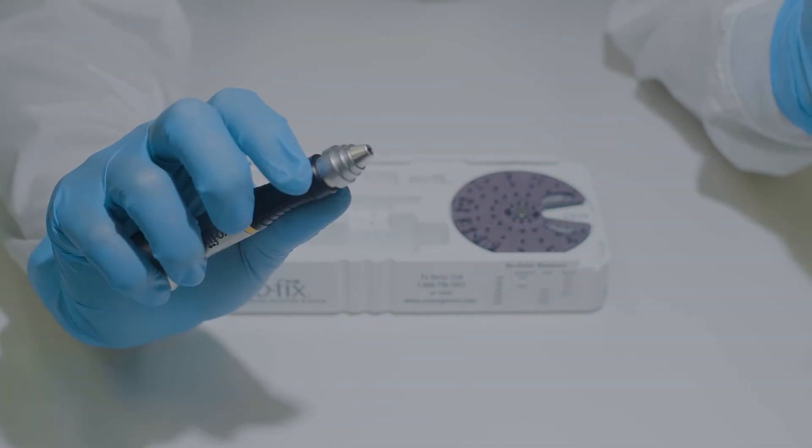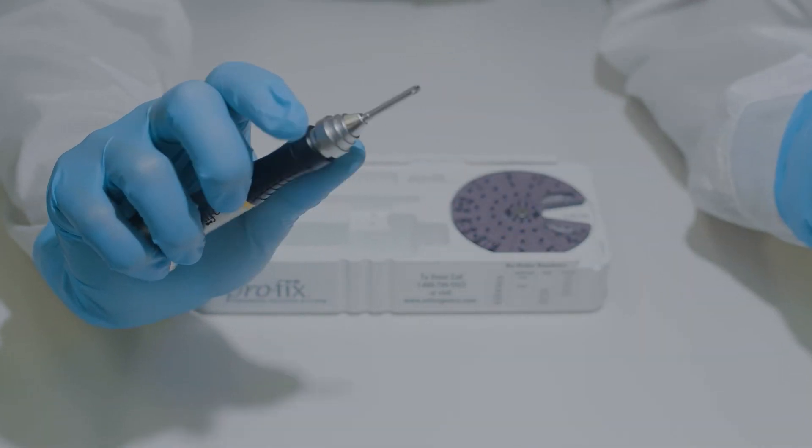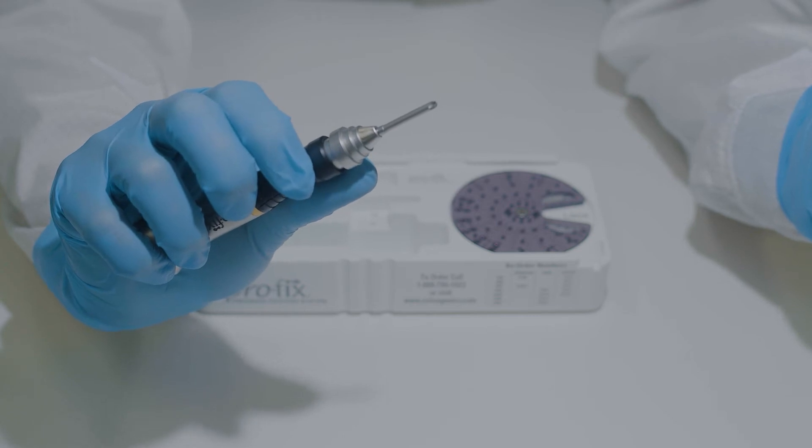In order to insert the blade, pull back the tiered collar, place the blade in the hole, and release the collar to lock the blade into place.